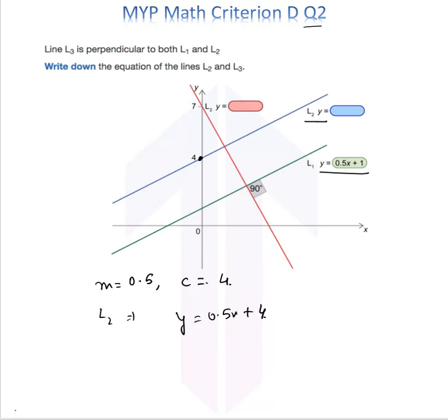And for the other line, this one here, they say it's perpendicular to L1. So the slope of L1 is one-half, so the slope of L3 has to be negative 2. That's the negative reciprocal of this one.